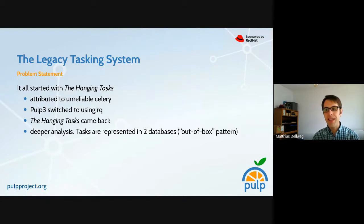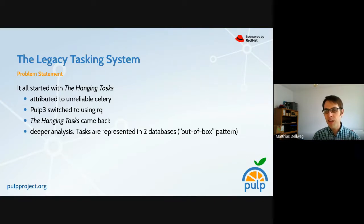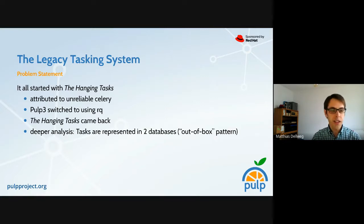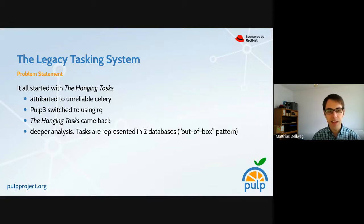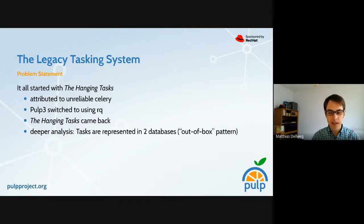Pulp always had a tasking system, and Pulp 3 always had a tasking system. This tasking system was kind of inherited from Pulp 2. It was using the same architecture — the same backbone worker threads, which were celery-based at that time. But it introduced a new concept: tasks were able to lock on multiple resources at the same time.